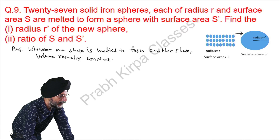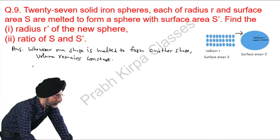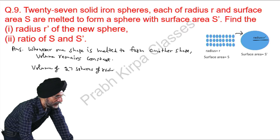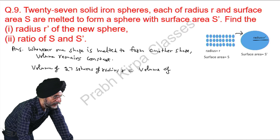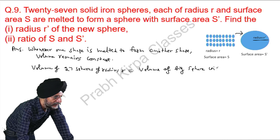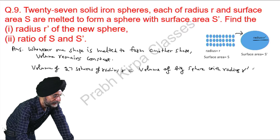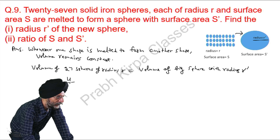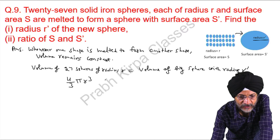The volume of 27 spheres of radius R is equal to the volume of the big sphere with radius R dash. The formula for the volume of a sphere is 4 over 3 pi R cubed. This same formula applies to the big sphere as well.